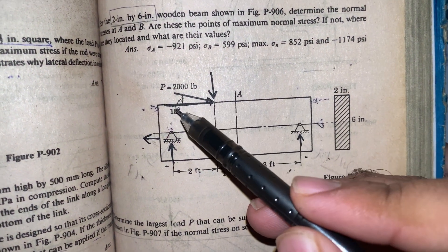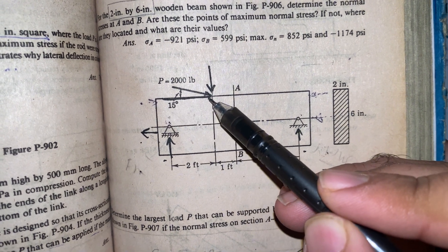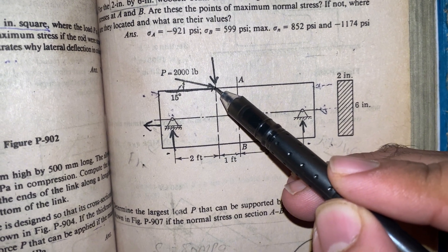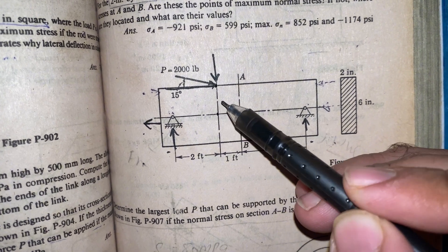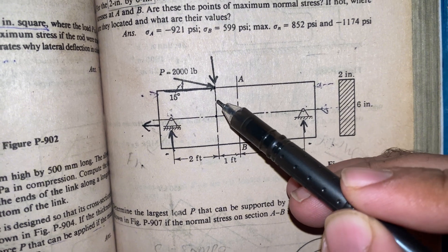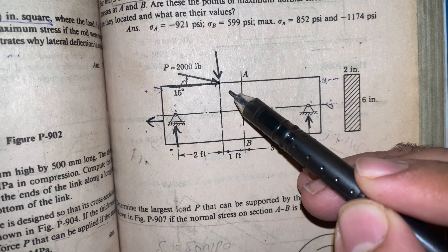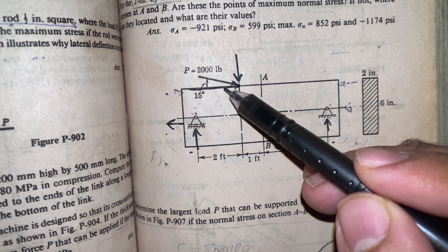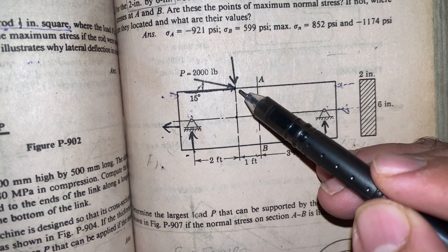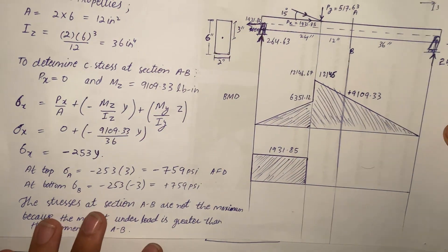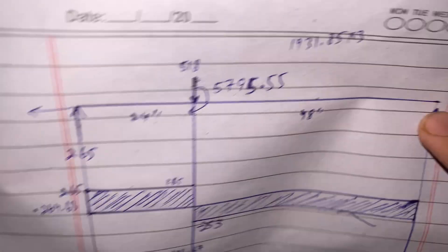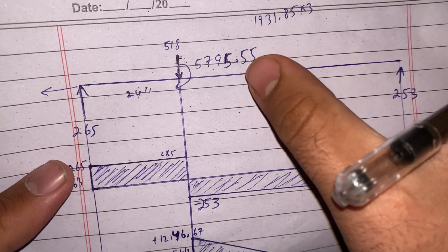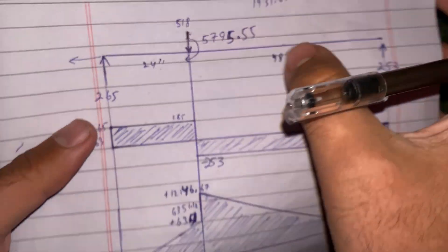The x-component of the load, Px, acts at an eccentricity — here the moment arm is 3 inches from the neutral axis. So this load also creates a bending moment. This point load therefore contributes both axial force and a bending moment, which are handled as separate steps in the combined stress approach.